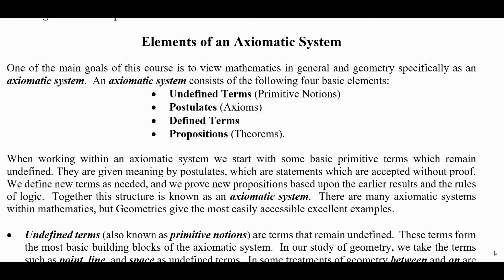Primitive notions is another name for undefined terms. An axiom is another name for a postulate. Propositions have several names — a theorem is another name for a proposition. These are the four things you should memorize.